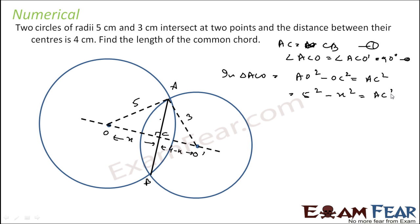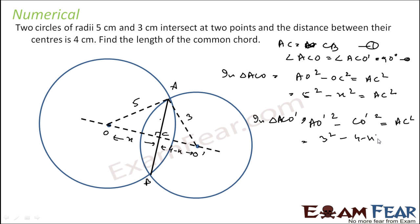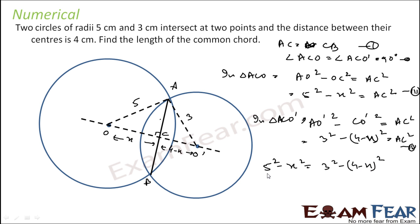Similarly in triangle ACO-dash: AO-dash squared minus CO-dash squared equals AC squared. What is AO-dash squared? 3 squared minus (4 minus x) squared equals AC squared. Since both equations equal AC squared, we can merge them: 5 squared minus x squared equals 3 squared minus (4 minus x) squared. So you solve this equation.